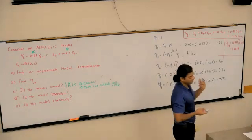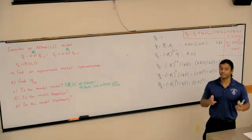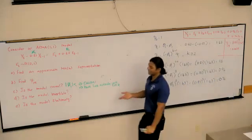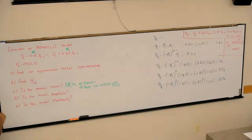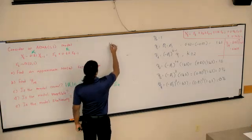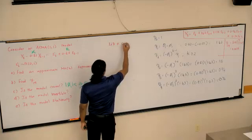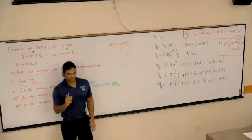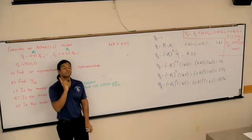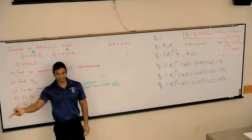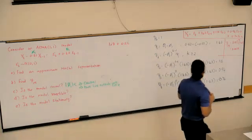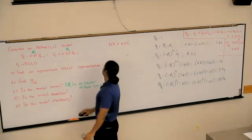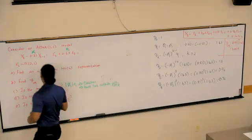If the roots are real, not a problem. If they are complex, if both the real and imaginary parts lie outside the unit circle, not a problem. But if one of them lies inside, for instance, we have 1.8 plus 0.25i, we want to check the magnitude and see if the magnitude lies outside the unit circle. Here, we take 1.8 squared plus 0.25 squared. So it is causal.